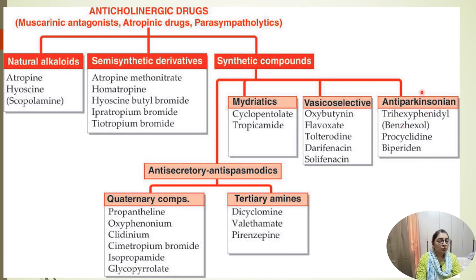Drugs used in Parkinson's patients penetrate the CNS blood-brain barrier and reach the CNS. These include trihexyphenidyl (also called benzhexol), procyclidine, and biperiden — all used as anti-Parkinson drugs.